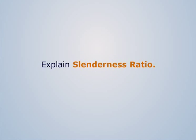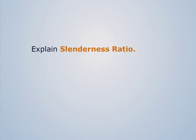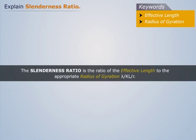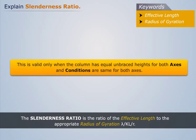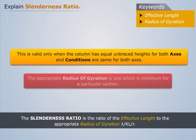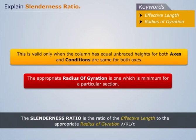The slenderness ratio is the ratio of the effective length to the appropriate radius of gyration, expressed as lambda = KL/R. This is valid only when the column has equal unbraced heights for both axes and conditions are the same for both axes. The appropriate radius of gyration is the minimum one for a particular section.